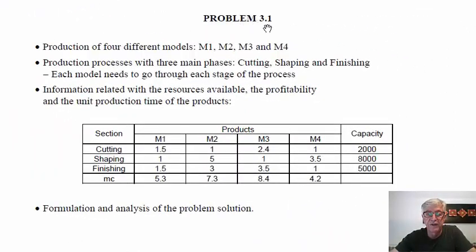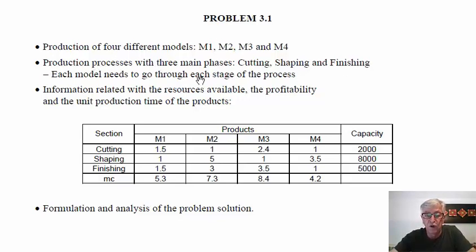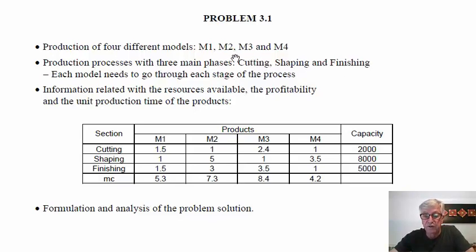Let's start with problem 3.1. In this problem we want to produce four products identified by Model 1, Model 2, Model 3 and Model 4. These products are produced involving three phases: cutting, shaping and finishing. Each model should go through the three phases. We have information related with the availability of the resources — the time available in each of these sections per year. We have 2,000 hours in the section of cutting available, 8,000 in shaping, and 5,000 in finishing.